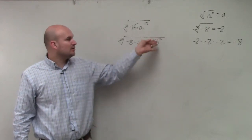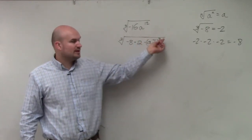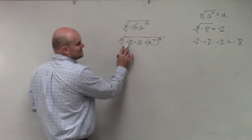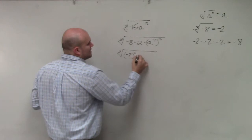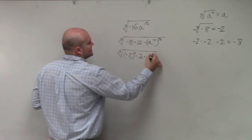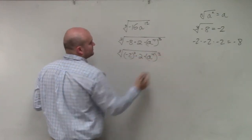Because, Natalie, when you raise an exponent to a power, you multiply the powers. Then this, I can rewrite as negative 2 cubed times 2 times a to the fourth cubed, right?